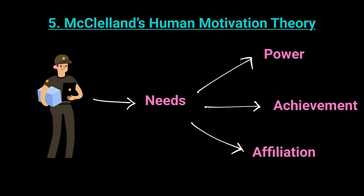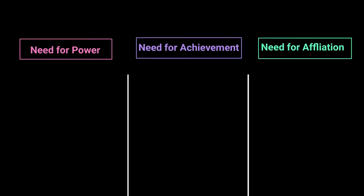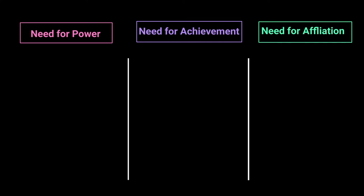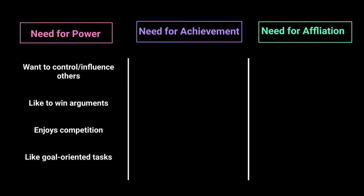Let's look at each of these in more detail - what kind of person should you picture when you hear need for power, achievement, or affiliation? When you think of need for power, think about these things: these are people who want to control others, who want to influence the decisions of others, and who want to decide the future of subordinates and other employees. These are people who always want to be in a position where they are in charge.